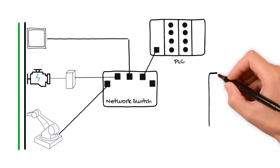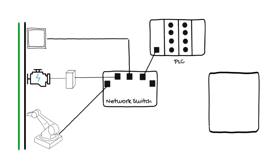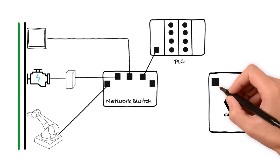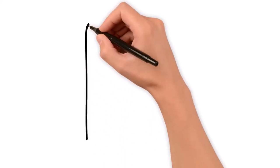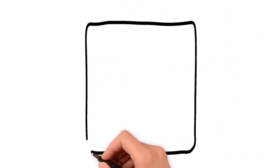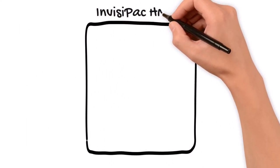Now we'll add a piece of Graco equipment to this assembly line. Graco equipment is just another device communicating with the same network switch. We'll use the Graco Invisipack HM10 Hot Melt Adhesive Dispense System in our example.